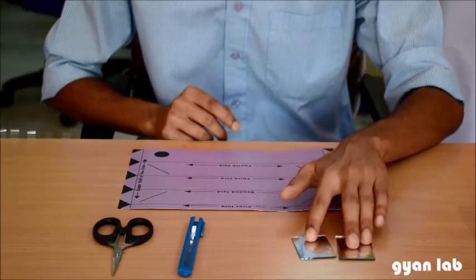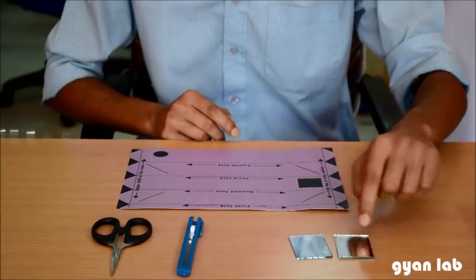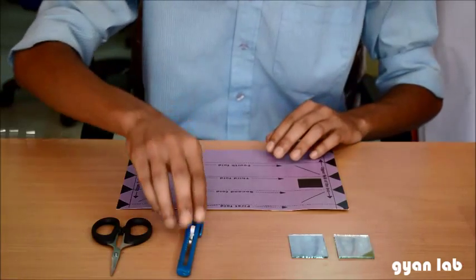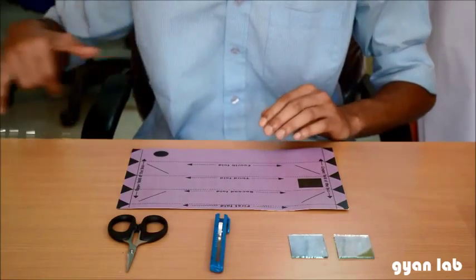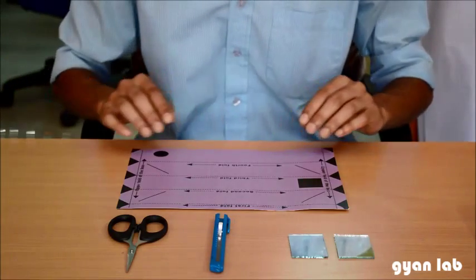We need to get two pocket mirrors. Please be careful with it because it has sharp edges. A box cutter and a pair of scissors. Also some tape that I have already cut out here in order to fasten the edges.